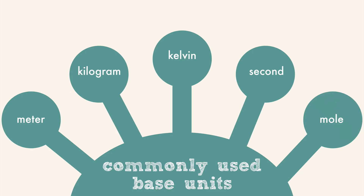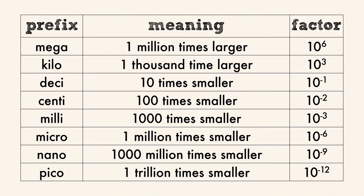We can use prefixes to make the units smaller or larger depending on what's needed. Here are some commonly used prefixes and the number they represent. Mega and kilo make numbers larger than the unit it precedes. Deci through pico make the numbers smaller than the unit it precedes.